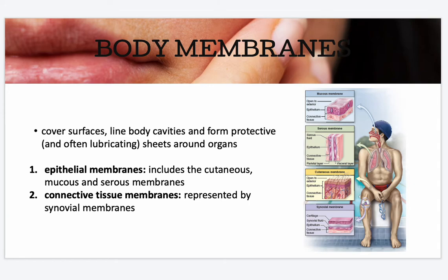Your body membranes cover your surfaces and line your body cavities, and they form protective sheets around your organs. Your epithelial membranes — that's your cutaneous, mucous, and serous membranes — and your connective tissue membranes are represented by your synovial membranes.